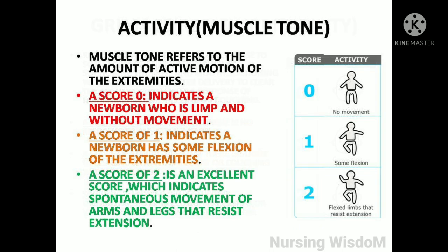Activity, or muscle tone, refers to the amount of active motion of the extremities. A score of 0 indicates a newborn who is limp and without movement. A score of 1 indicates a newborn with some flexion of the extremities. A score of 2 is an excellent score indicating spontaneous movement of arms and legs that resist extension.